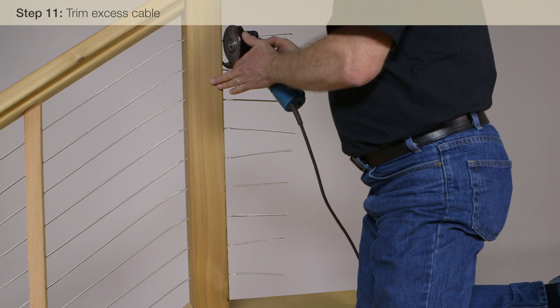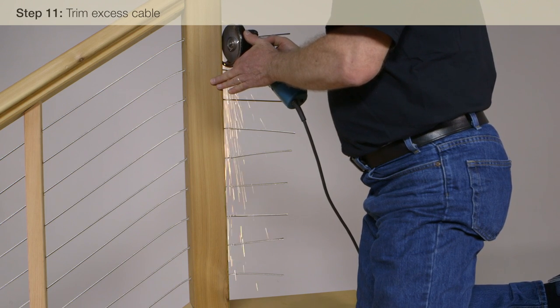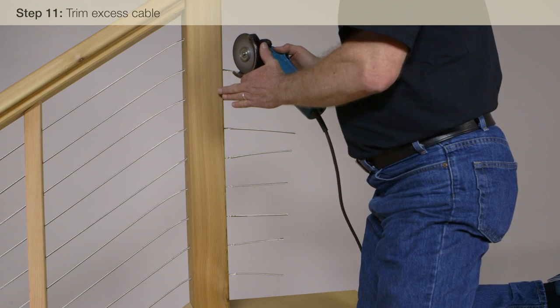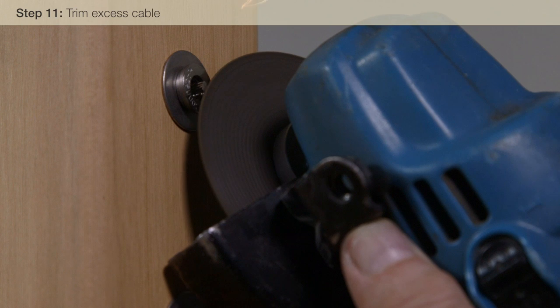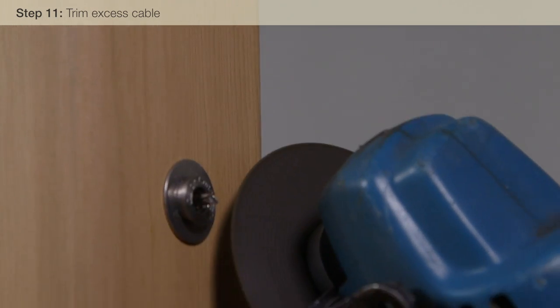At the Quick Connect end, we are using the electric grinder again to remove excess cable that will impair the attachment of the stainless steel end cap. Get as close to the Quick Connect fitting as possible.